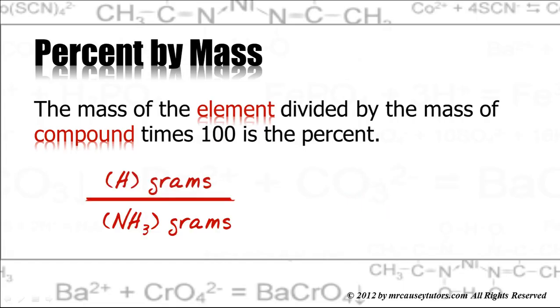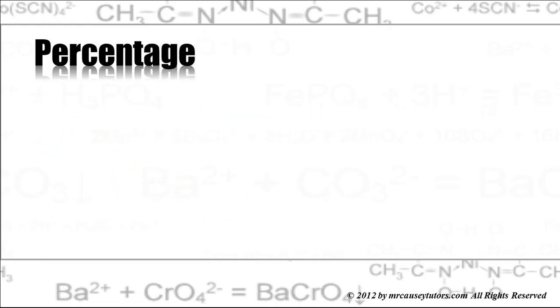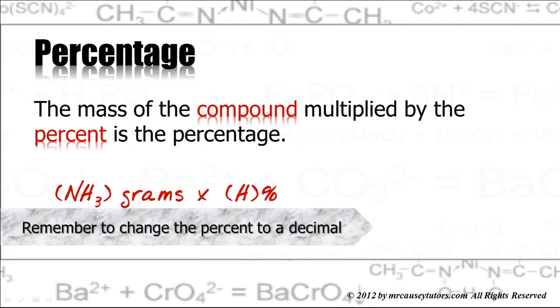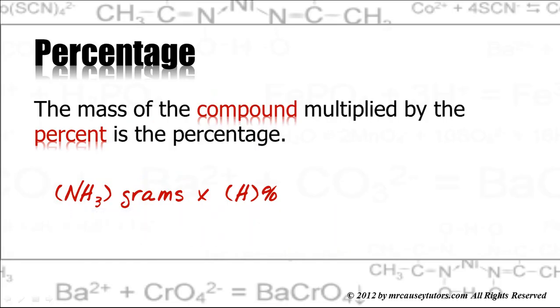So if I take grams of hydrogen and divide it by the grams of ammonia, then multiply it by 100, that gives me the percent hydrogen. And a percentage is just taking the mass of the compound, multiplied by the percent. Grams of ammonia, multiplied by the percent hydrogen, and don't forget to change the percent to a decimal, and that'll give us the grams hydrogen.